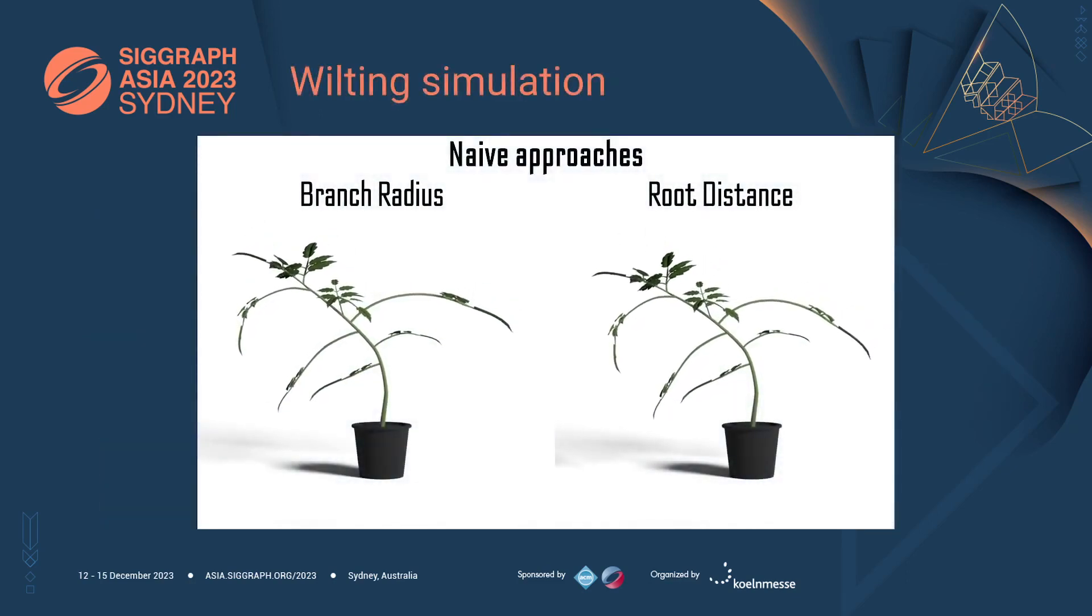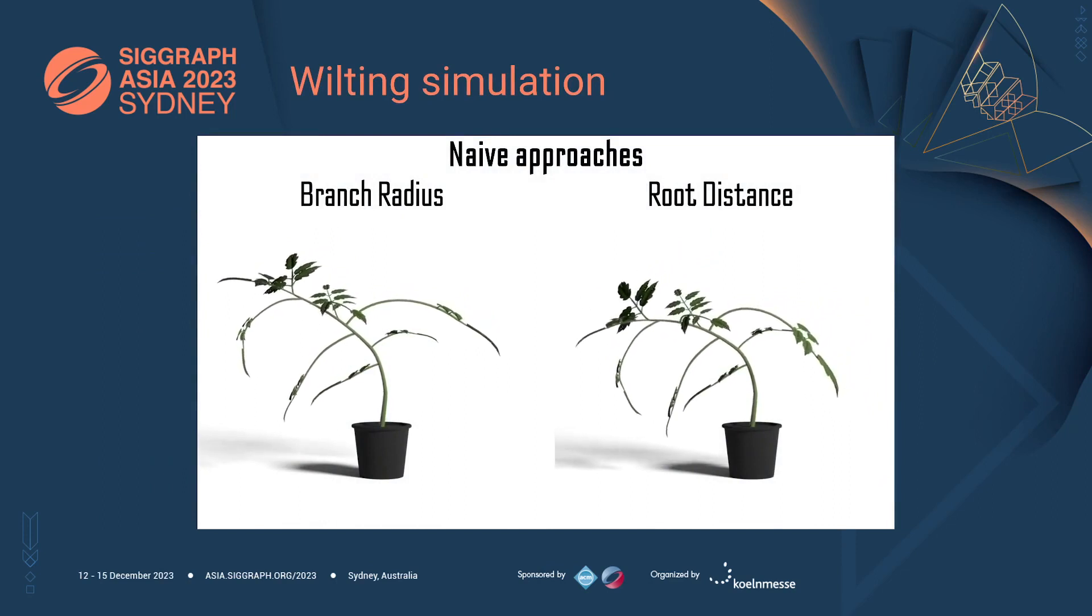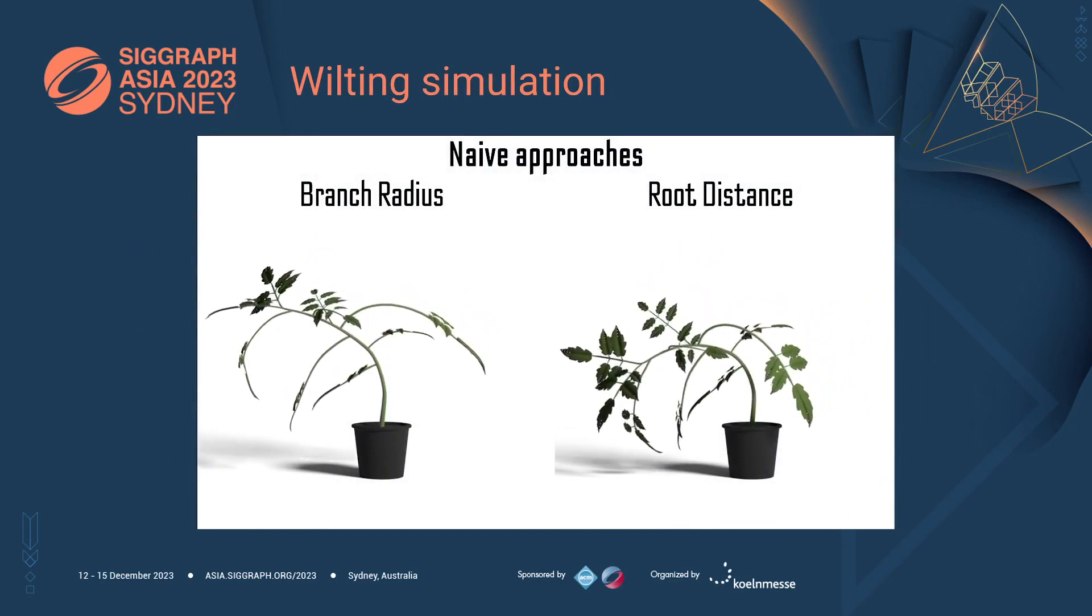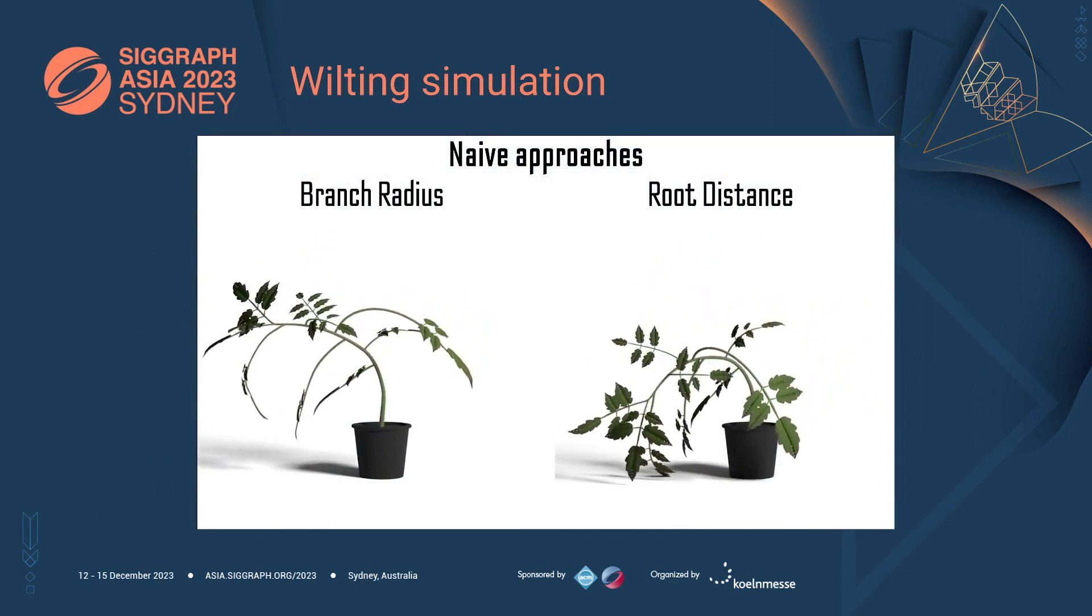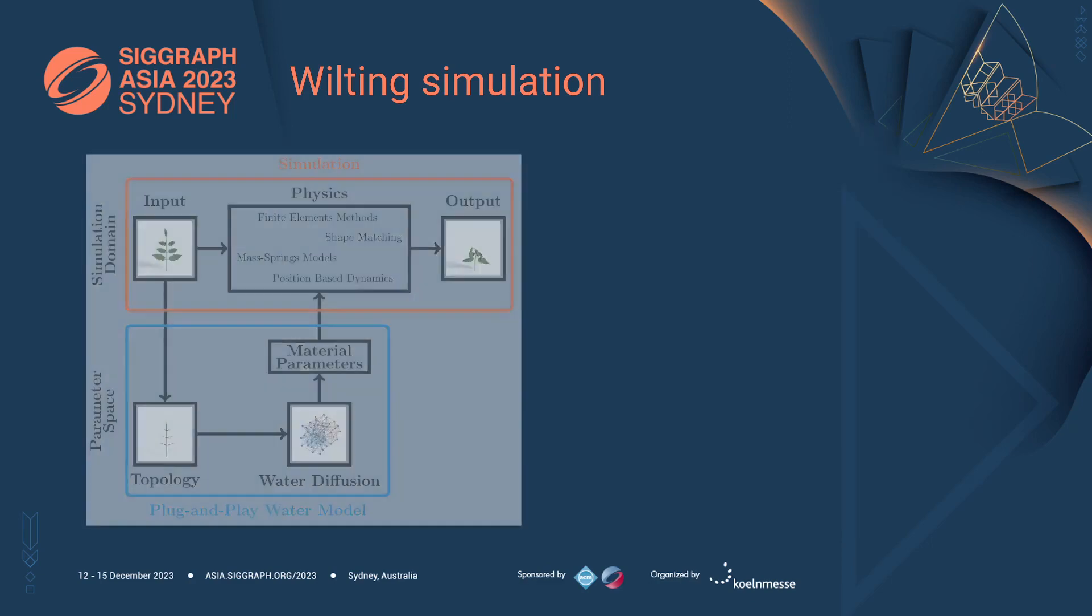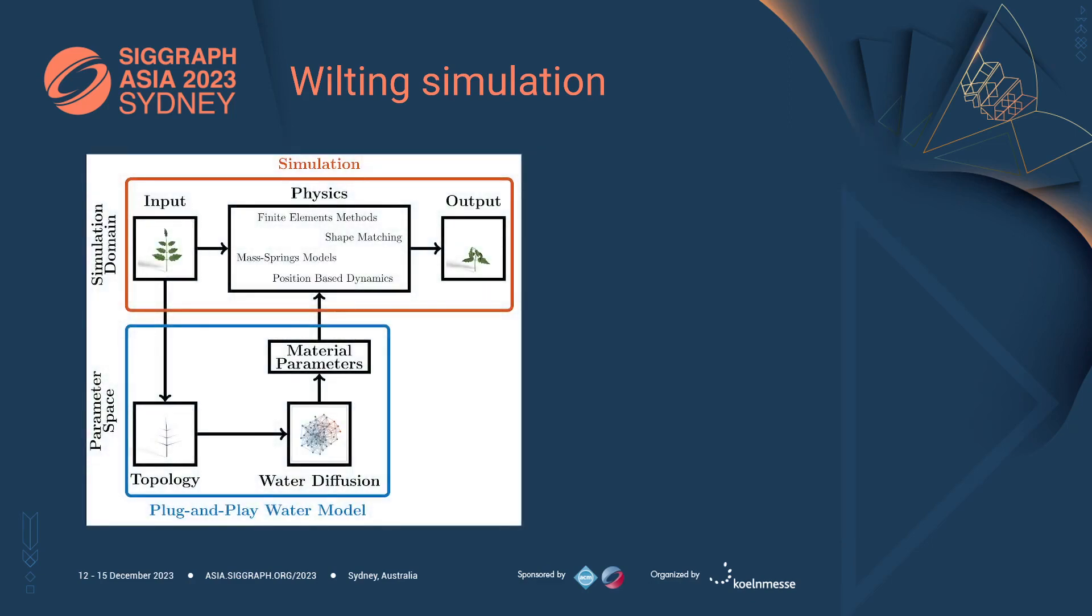Wilting is a complex process that involves a wealth of biological mechanisms. Because of that, we cannot simulate a plant by just tuning its stiffness as a simple function of some plant parameters. The results would look weird and unnatural. Contrarily, we propose a plug-and-play framework that models the process of water diffusion inside a plant.